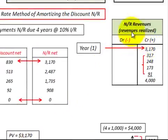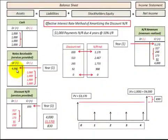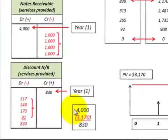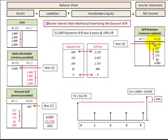So we go to our notes receivable revenues and record that present value of $3,170. After recording that, we see we have a credit balance of $3,170 opposed to a debit balance on our notes receivable of $4,000. We make up the difference through the discount to notes receivable, calculated at $830 — that's the $4,000 in payments minus their present value. So we have a credit of $830 in discount to notes receivable, plus the $3,170 credit in revenues, which balances with the $4,000 in notes receivable.